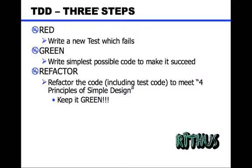So these are the three steps of TDD: red, green, refactor. Red is about writing a failing test first, then you write code to make that test pass, and then you refactor to make the code and test better. At the refactor stage you can refactor both the test and the code — the test is a piece of code you are going to maintain over time and it should be clear enough.